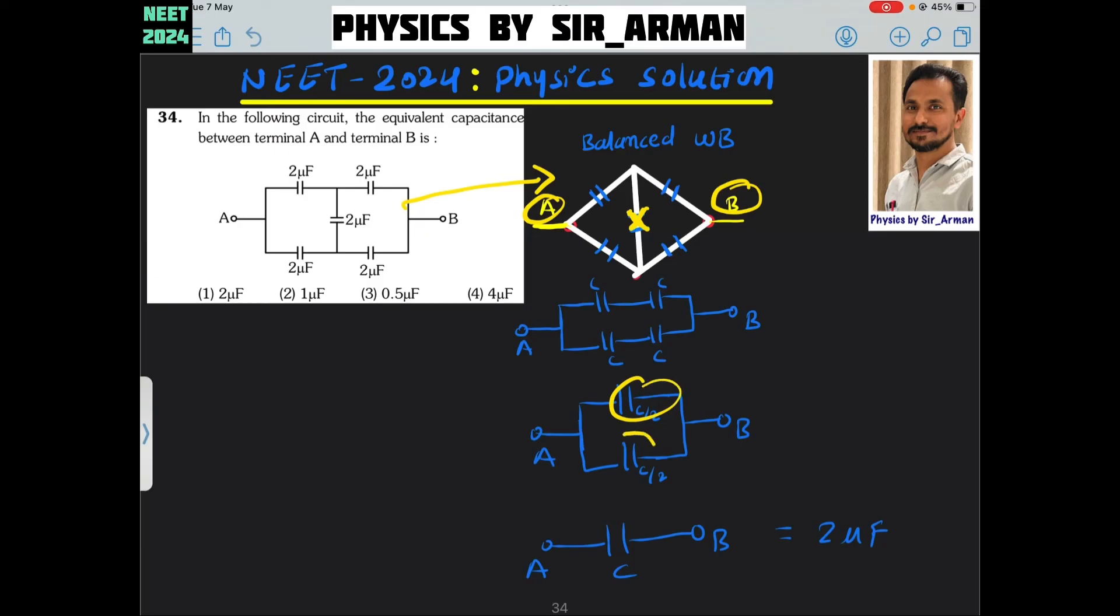C by 2, C by 2. For parallel combination we add them. C by 2 plus C by 2 is just C. The resultant combination is C, and C is nothing but 2 microfarad because all are equal. Each I have taken as C.